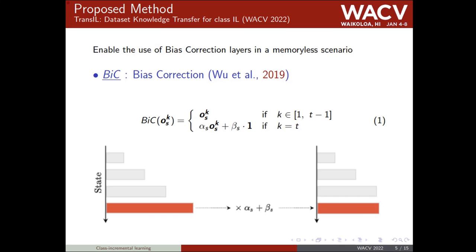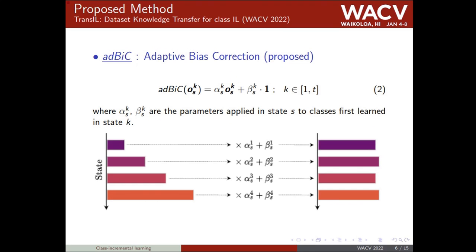The first drawback of this method is its dependency on memory of the past, because calibration parameters are estimated on validation sets of past and new classes. The second drawback is that this method does not guarantee that scores of all classes are balanced, since we only rectify scores of new classes.